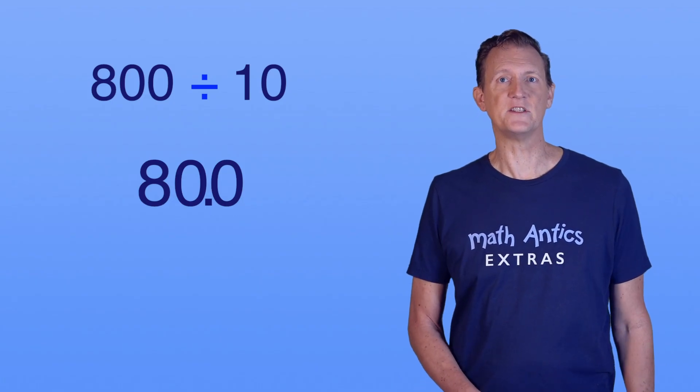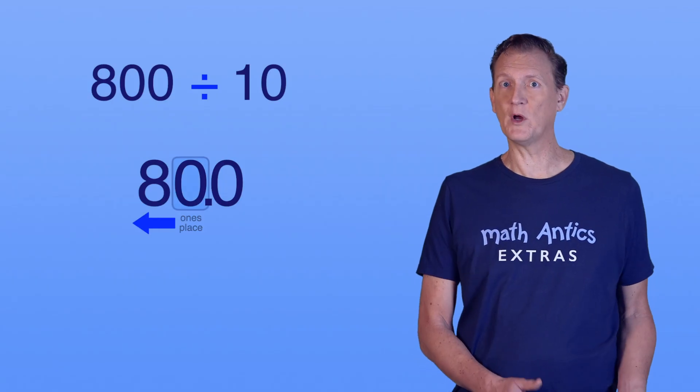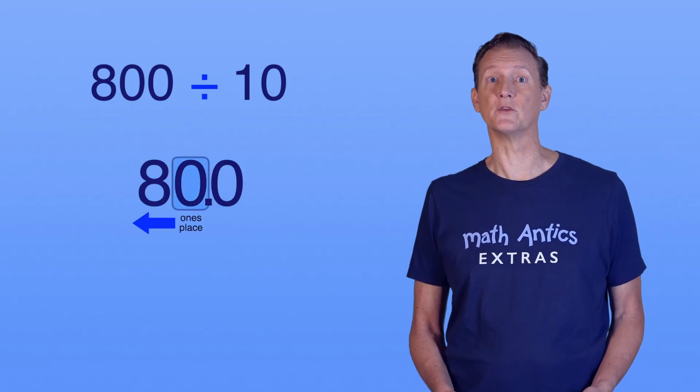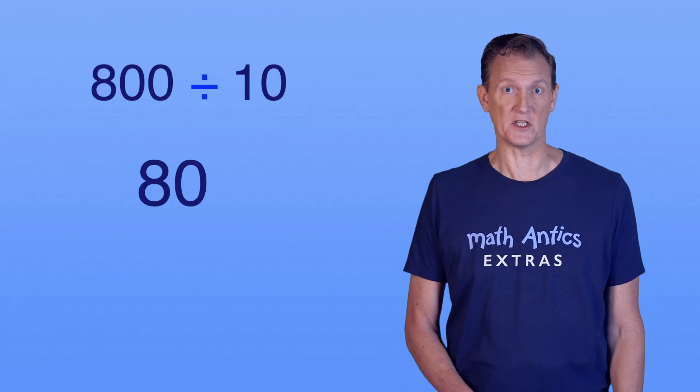There, now we have 80.0. And just like we can trim the starting zeros that are to the left of the ones place, we can trim the ending zeros that are to the right of the ones place. We can get rid of the decimal point too, since there aren't any decimal digits anymore.